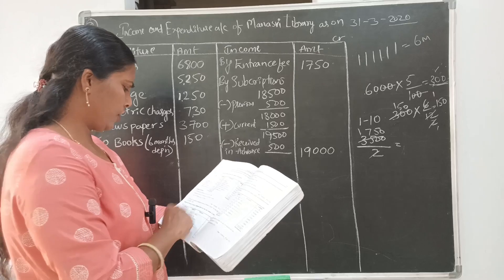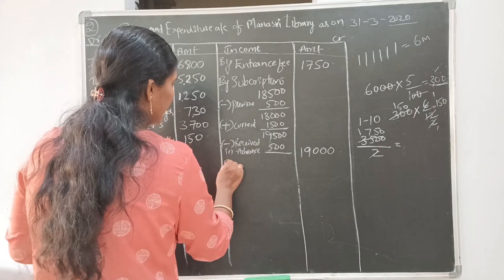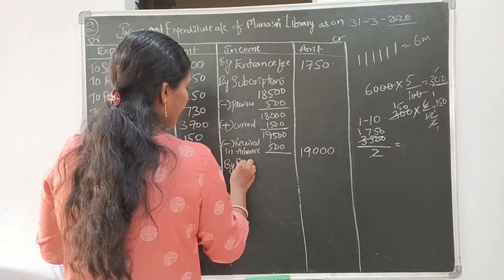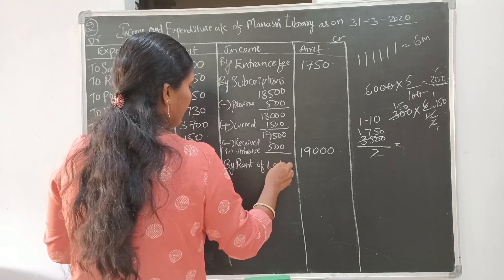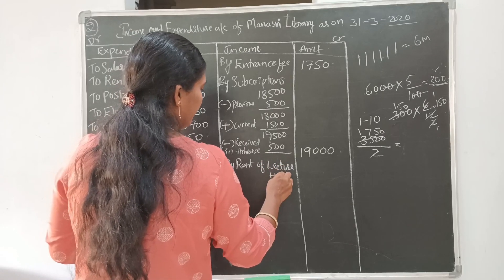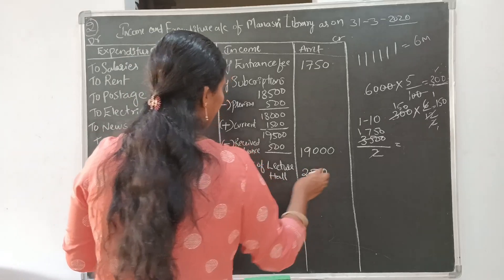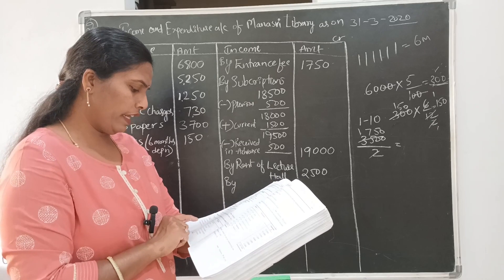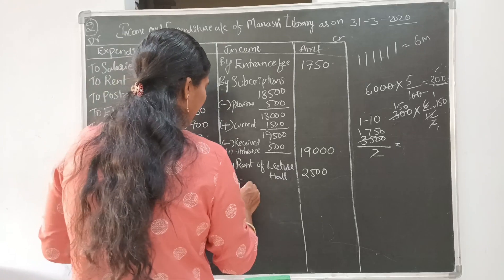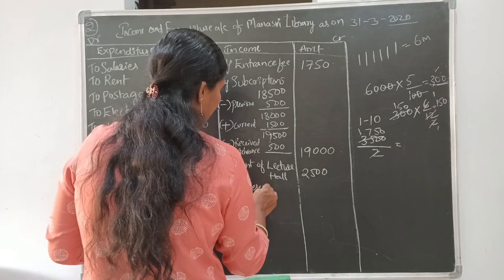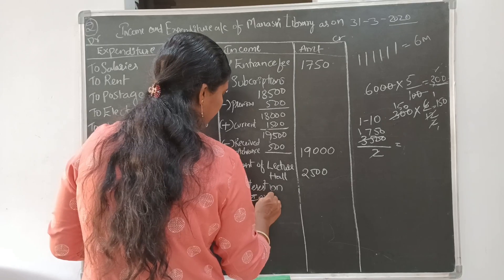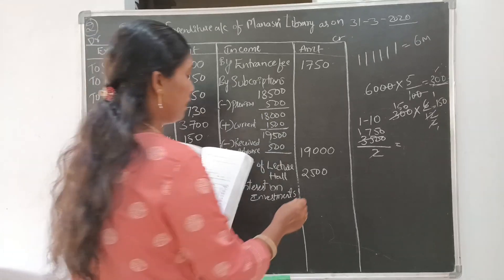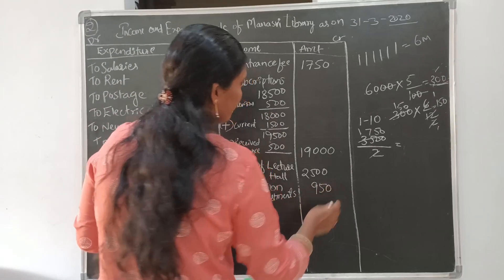Next, rent of lecture hall: 2500. This is recurring rent — every month we are receiving it. So rent of lecture hall 2500 is revenue income. Interest on investments is also recurring — every month or quarterly we receive it. Interest on investments: 950.